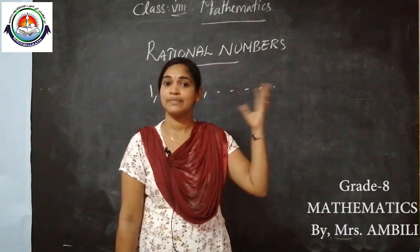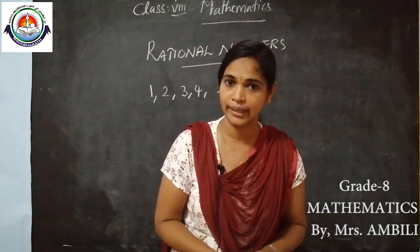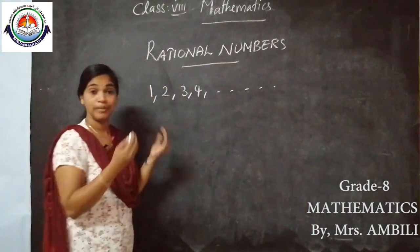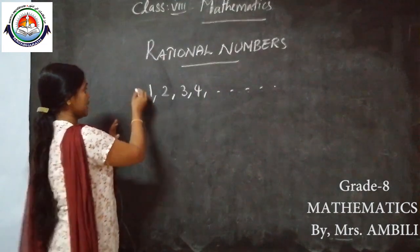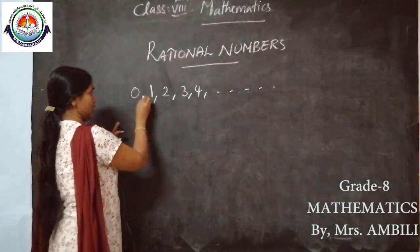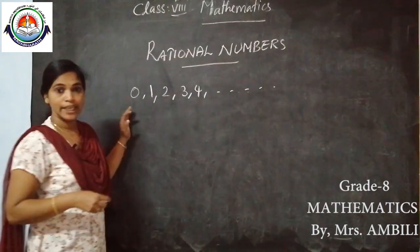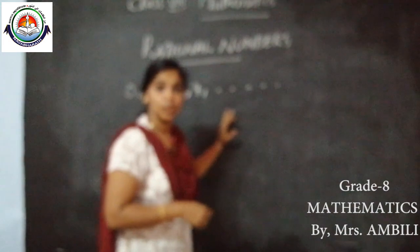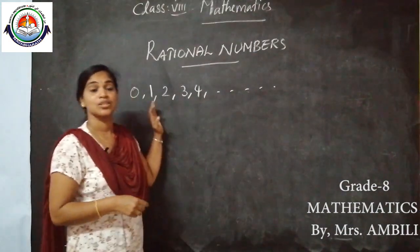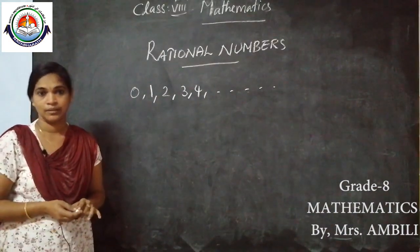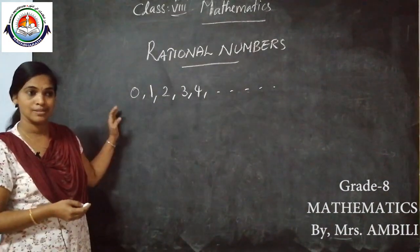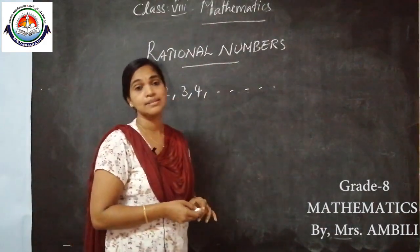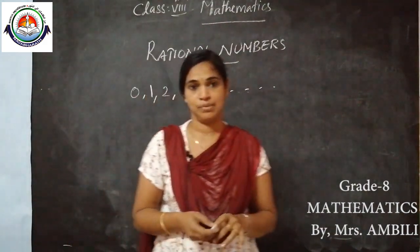These are all things we studied in earlier classes. So if we include 0 to this number system — that is 0, 1, 2, 3, 4, etc. — this is known as whole numbers. Including 0 to the natural numbers gives us whole numbers.